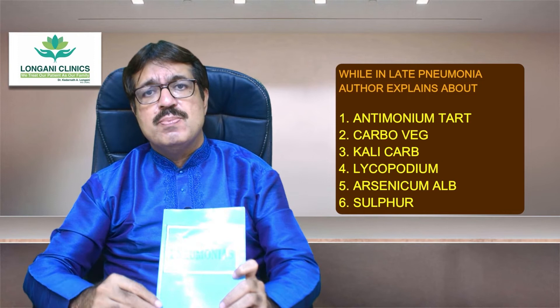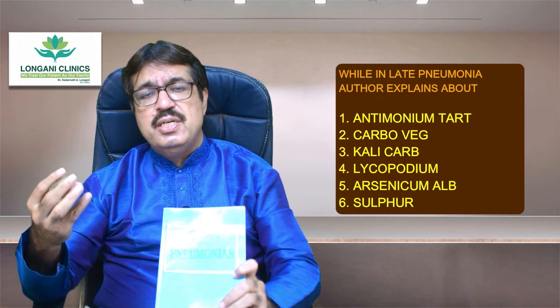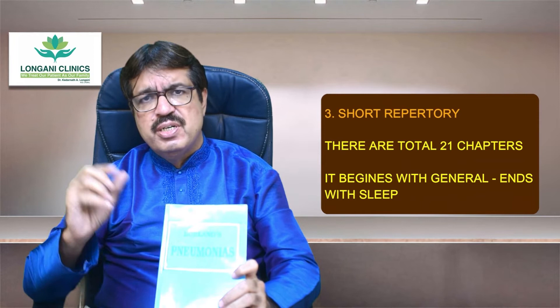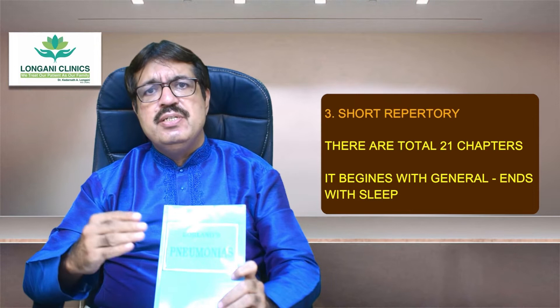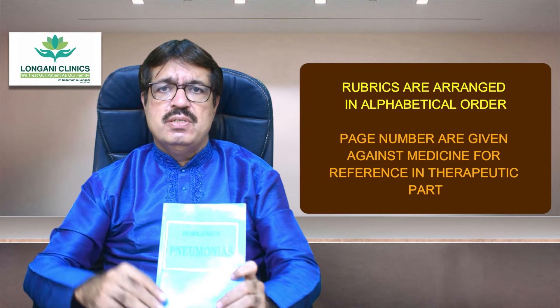While in late stages of pneumonia, the author explains about drugs like antimonium tart, carbo veg, kali carb, lycopodium, arsenic, and sulphur. The last portion is a short repertory with a total of 21 sections, beginning with generals and ending with the sleeve. In the repertory portion, the rubrics are arranged in alphabetical order.